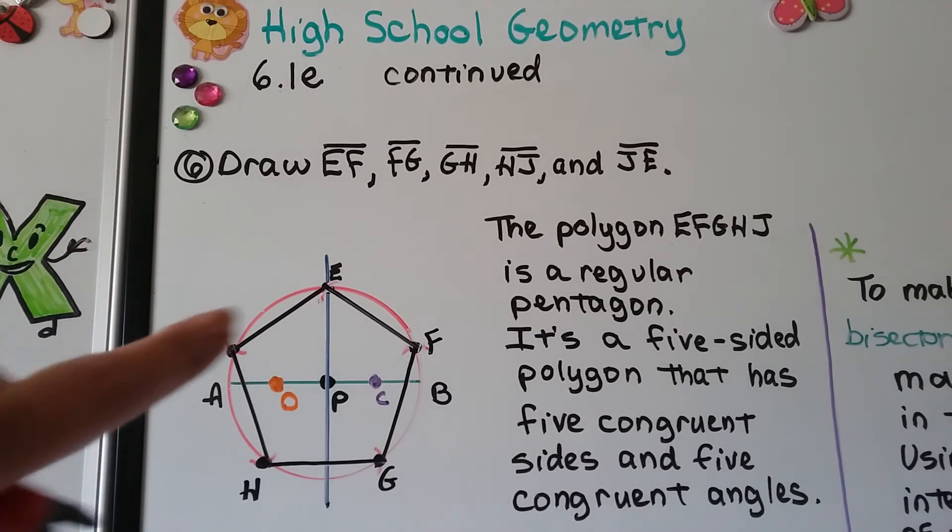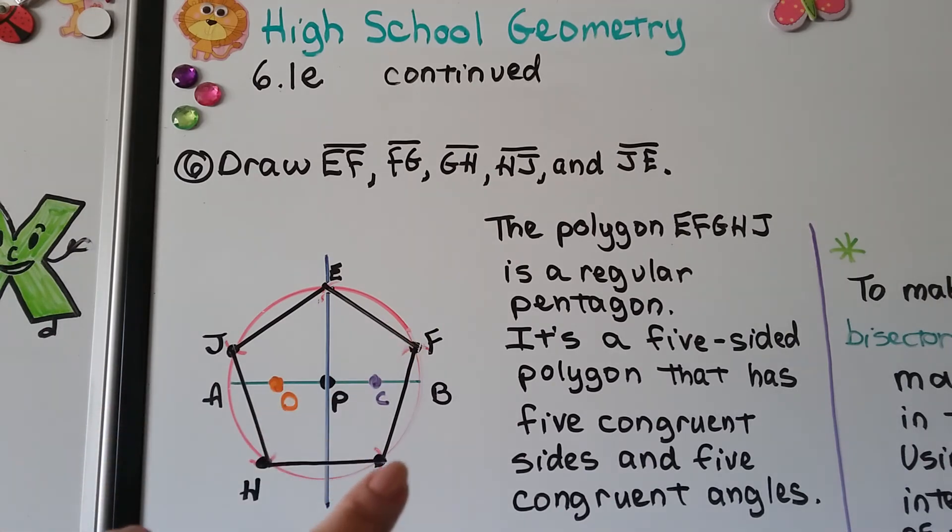Now we can draw segments EF, FG, GH, HJ, and JE. Polygon EFGHJ is a regular pentagon—it's a five-sided polygon that has five congruent sides and five congruent angles.